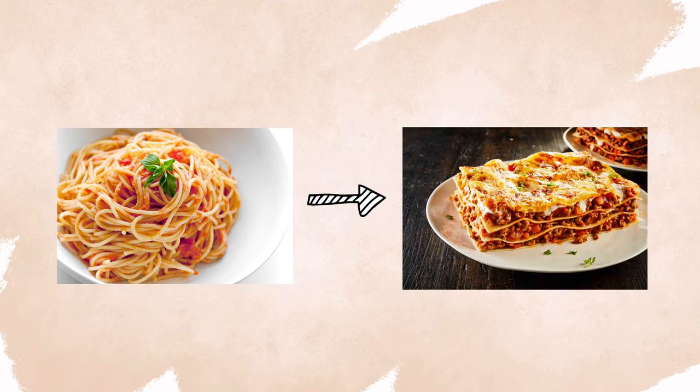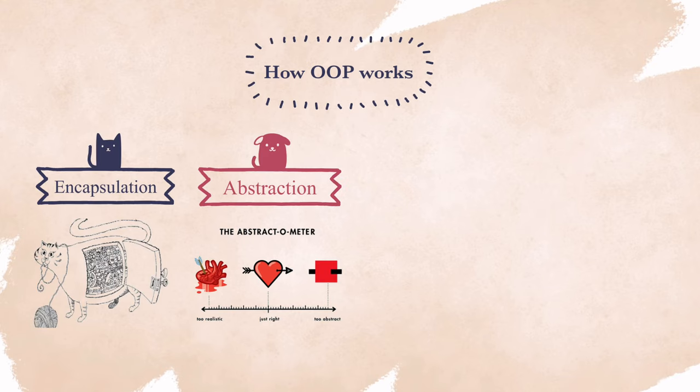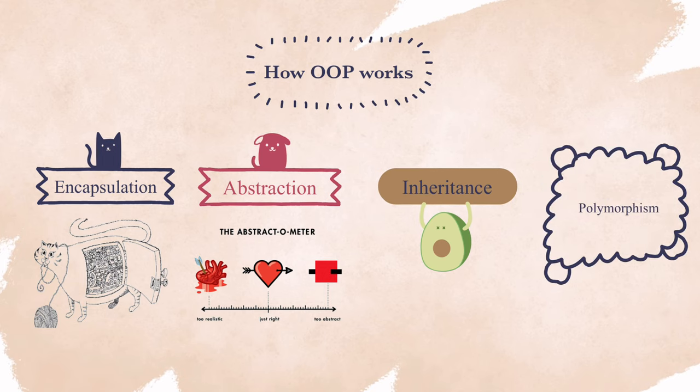Imagine that we could somehow transform this messy spaghetti into lasagna with different layers and neatly organized. Isn't it much better? I personally like it better too. OOP solves this exact problem through two principles: encapsulation and abstraction. Two other main principles are inheritance and polymorphism, which I'll also talk about in a second.